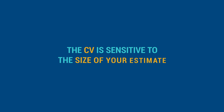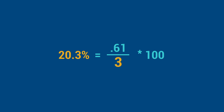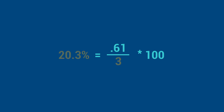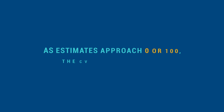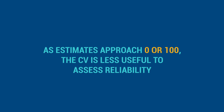One thing to keep in mind is that the CV is sensitive to the size of your estimate. A very small estimate in the denominator, like a 3% poverty estimate, will yield a large CV. The reverse, a 97% poverty estimate, will yield a very small CV. As estimates approach 0 or 100, the CV is less useful to assess reliability.